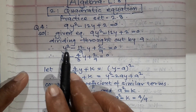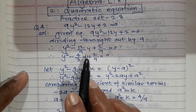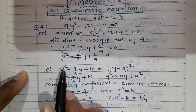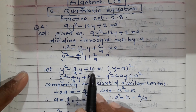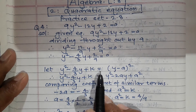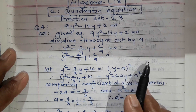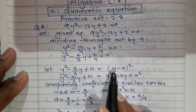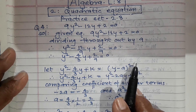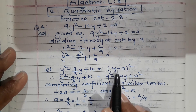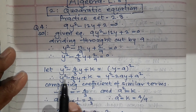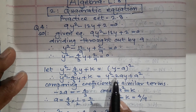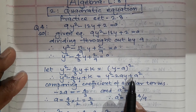Now assume: let y² minus 4/3 y, for this we write k, so y² minus 4/3 y plus k is equal to (y minus a)². Since the coefficient is negative, we write (y minus a)². Expanding: y² minus 4/3 y plus k equals y² minus 2ay plus a².